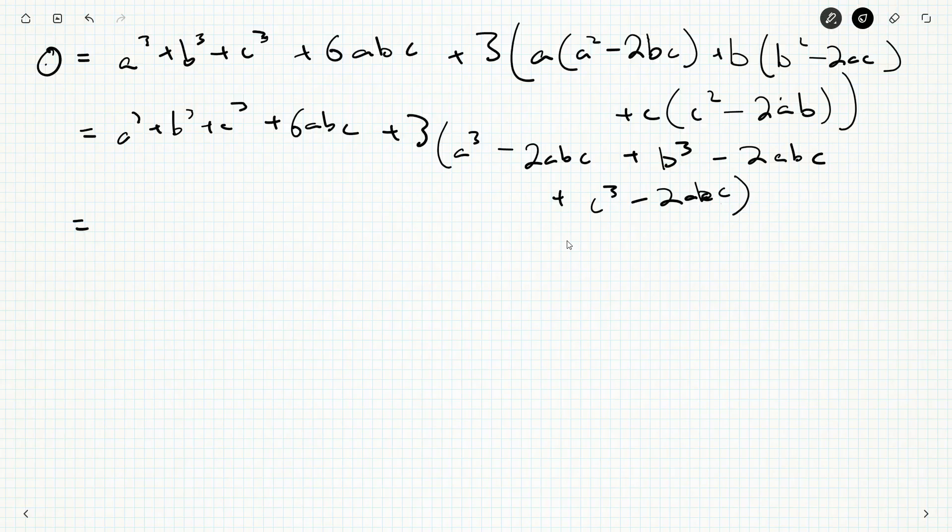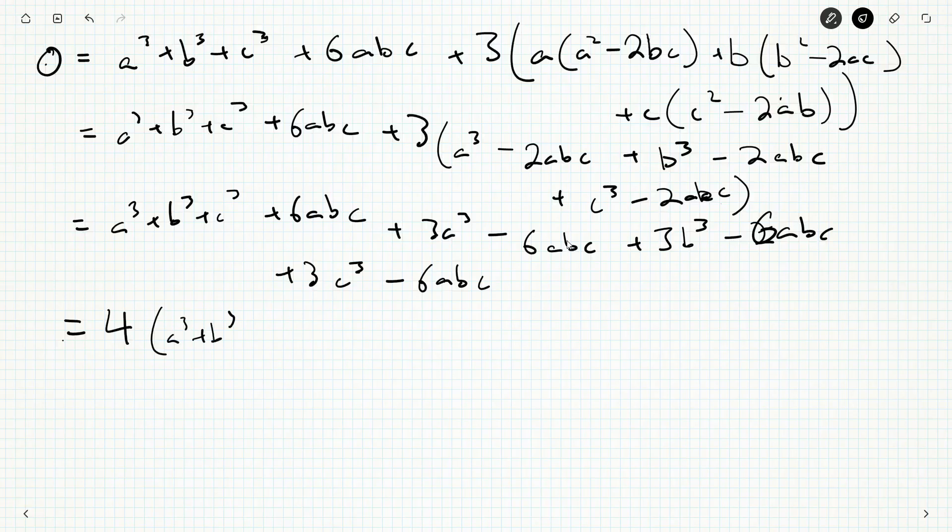So, now we can bring this 3 out here. a cubed plus b cubed plus c cubed plus 6abc. Plus 3a cubed minus 6abc. Plus 3b cubed minus 6abc. Plus 3c cubed minus 6abc. So, let's collect these things now. So, we've got 4a cubed plus 4b cubed plus 4c cubed. Then we have 6 minus 6 minus 6 minus 6. We have negative 12. So, minus 12abc's.